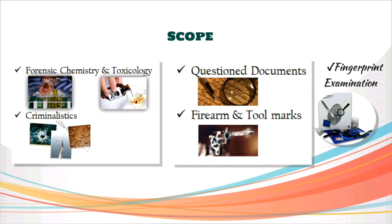Next, coming to criminalistics. This is the study of trace evidences like fiber, hair, soil, paint, and so on. The people who do these interpretations are called criminologists. This is a broad subdivision encompassing all the other scopes and will be studied in detail in coming videos.